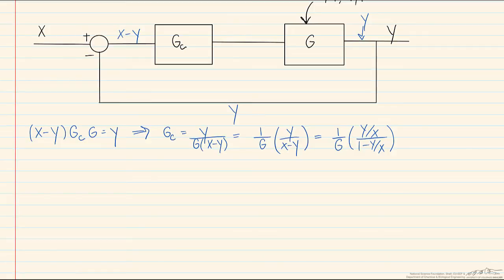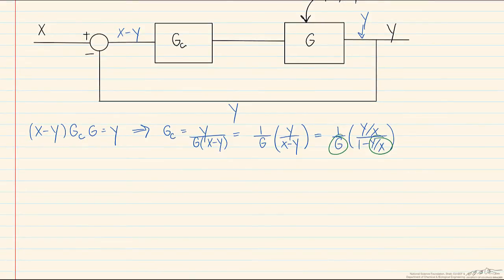This Y over X term represents a response of the output to a change in the input. So if we specify a transfer function that represents the sensor transmitter valve and process, and we specify a desired response, we can tease out what the controller transfer function should be. And not only that, we can also find what the value of the relevant parameters are, Kc, tau i, tau d.